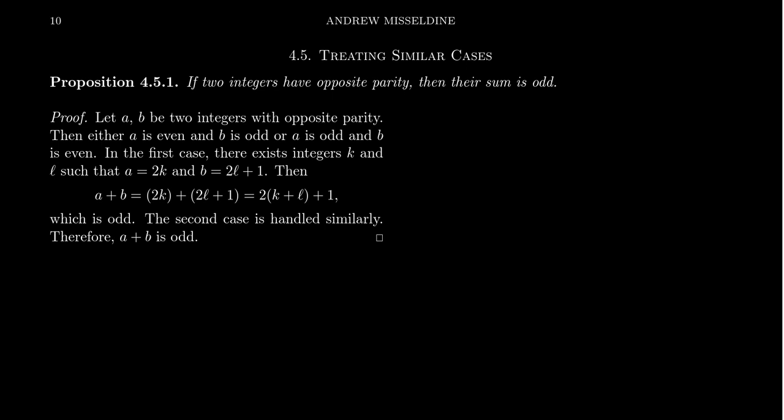If the two cases are so similar, including the second consideration might actually be unnecessary. In mathematical writing it is customary and acceptable to first prove the first case, and then for the similar case you can exclude it by giving a statement like: 'the second case is handled similarly.' That is, the writer acknowledges to the reader that there is another case that needs to be considered, but because the proof is so similar, we're not going to write it — but both writer and reader will know what that proof is.